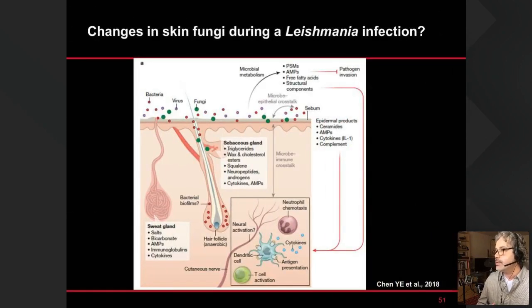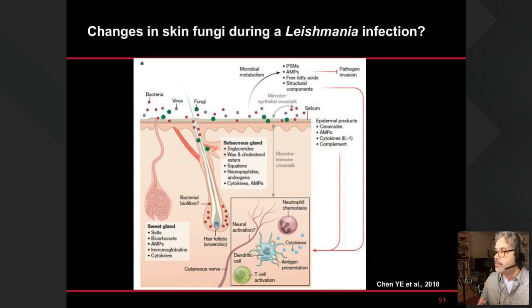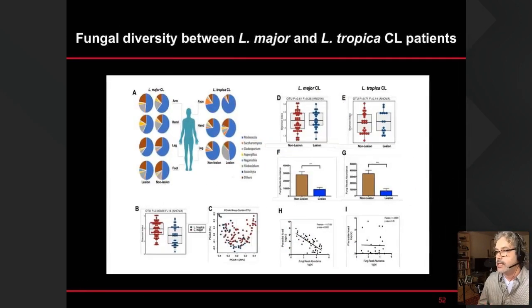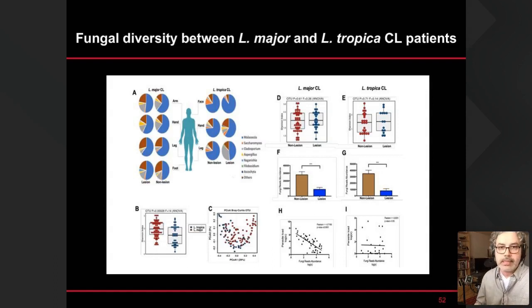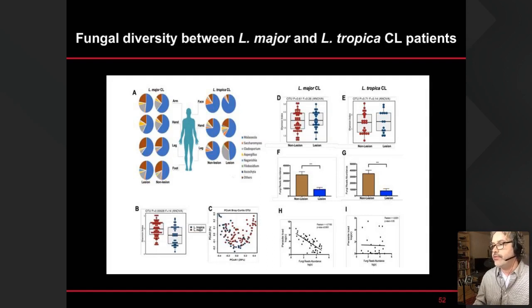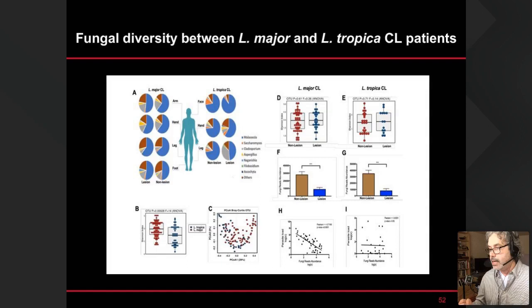An important component of the skin microbiome is what it can tell us about the fungal population on the skin. Yasser's 18S analysis take-home message: when looking at infections individually by L. major and L. tropica, we don't see major differences between non-lesion and lesion skin in fungal diversity between the two groups. We don't see necessarily any imbalance between the two groups, but this is something we are looking into in more detail.